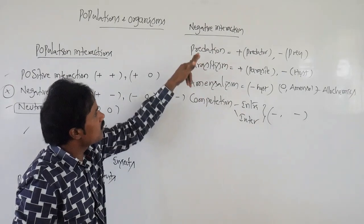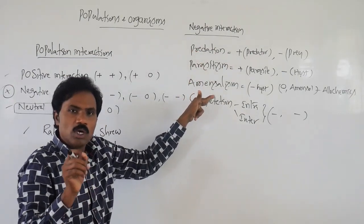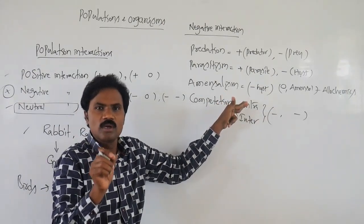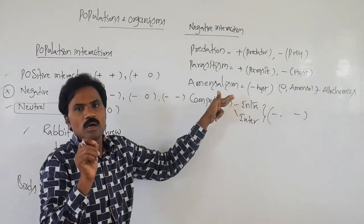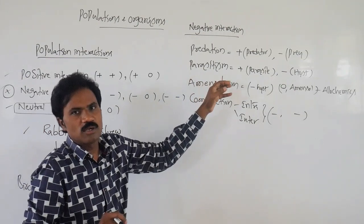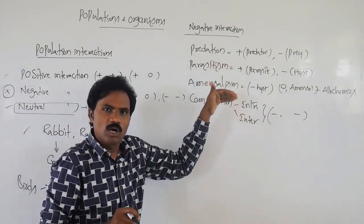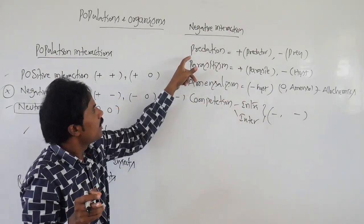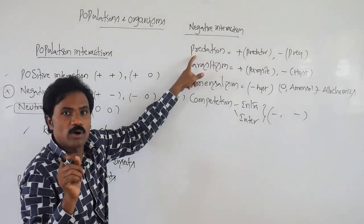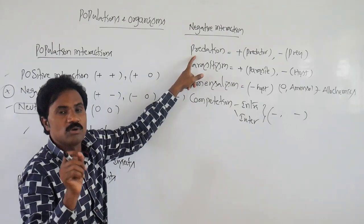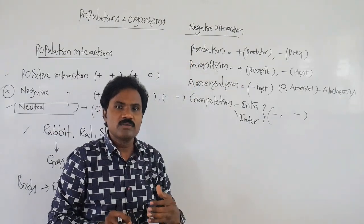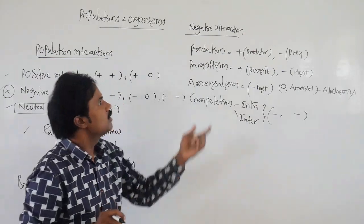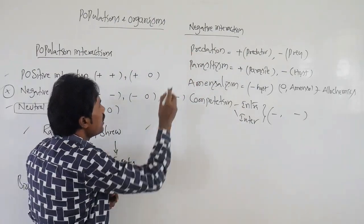Among these negative interactions, which one acts as a critical role in biotic controlling methods? The answer is predation. Predation acts as a biological controlling agent. Related to predation examples: on land, a snake acts as predator and rat acts as prey. The prey is harmed while the predator is benefited.